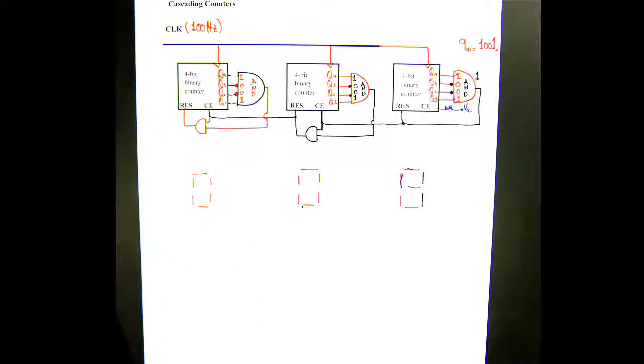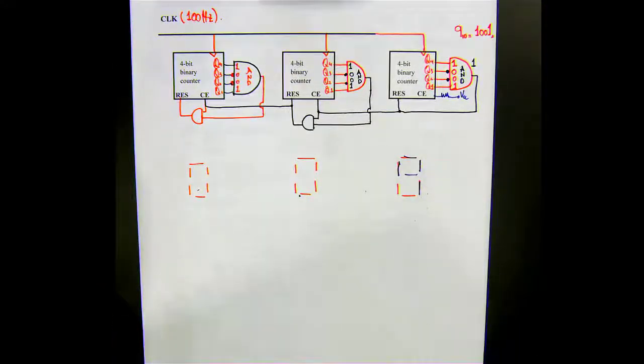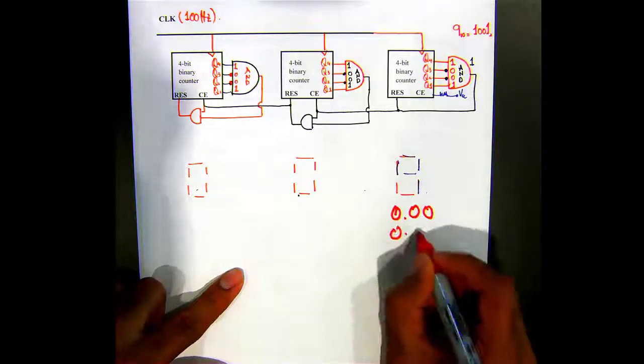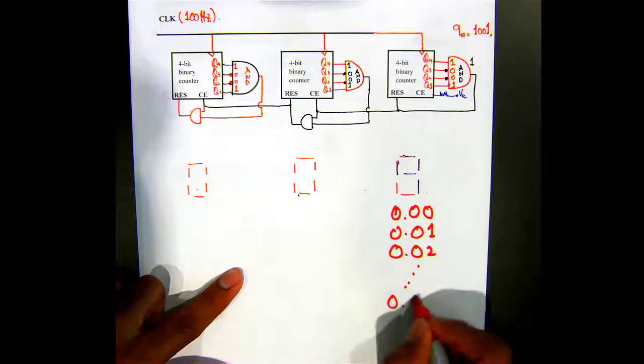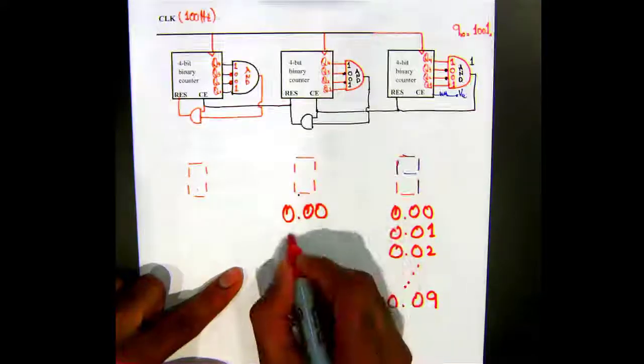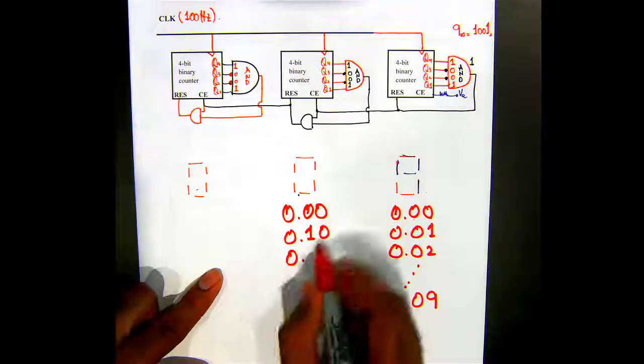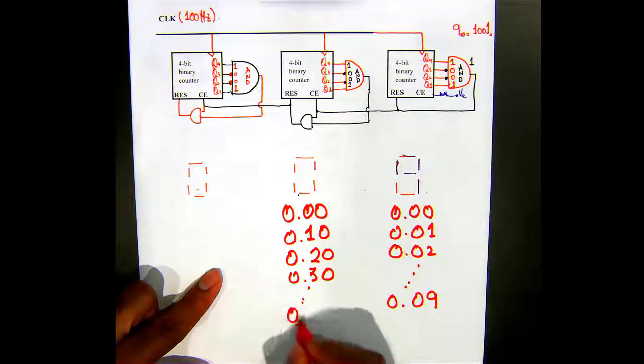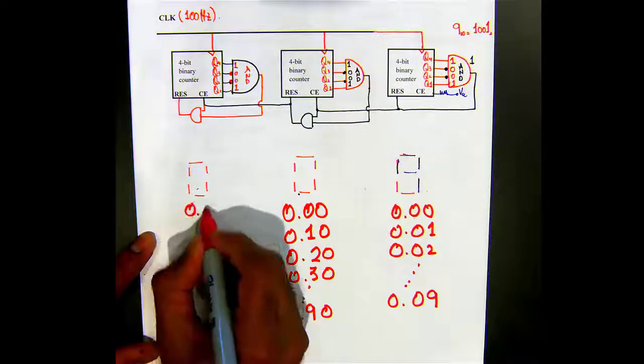And this goes to zero. So in other words, they'll start out with 0.00, 0.01, 0.02, goes all the way to 0.09. And then this will initially go to 0.10, 0.20, 0.30. And this is the seconds right here, initially everything is 0.00.